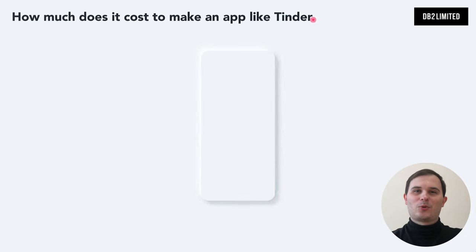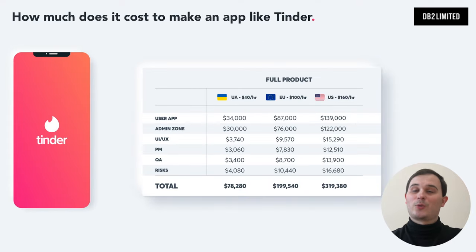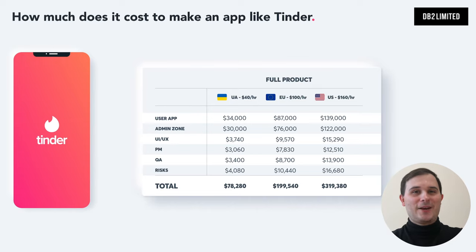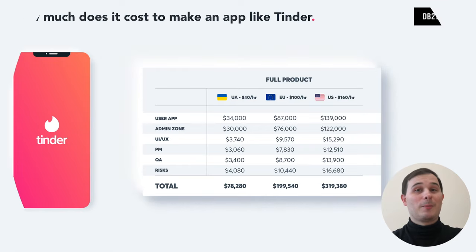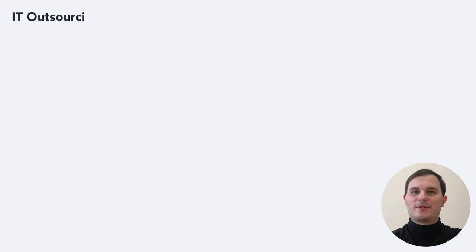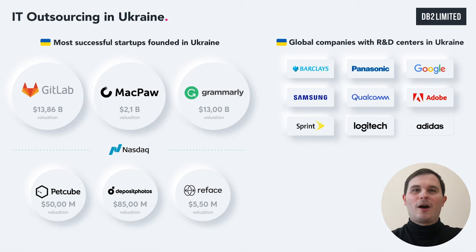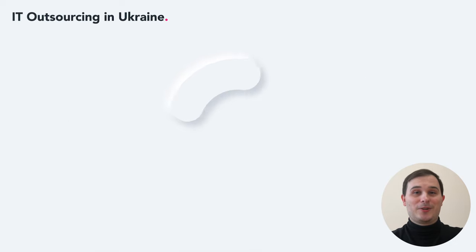When it comes to pricing quotes, many people totally forget to include quality assurance, bug fixing, project management, maintenance and risks. If you have an investor and a contract requiring an in-house development team, the dating app development costs are likely in line with US or EU figures. But if you don't have these obligations, you can easily reduce your expenses without sacrificing quality by developing your software in Ukraine. Many startups are getting incredible value by doing this — GitLab, Grammarly, Jubal and more are all developed in Ukraine.